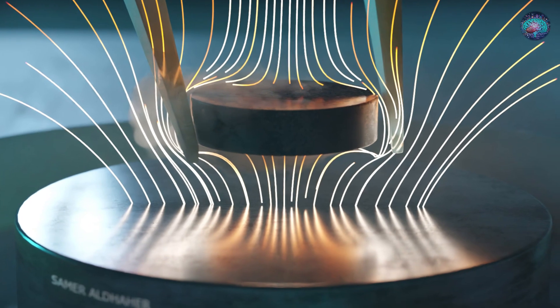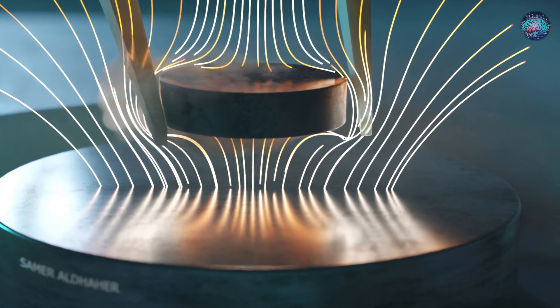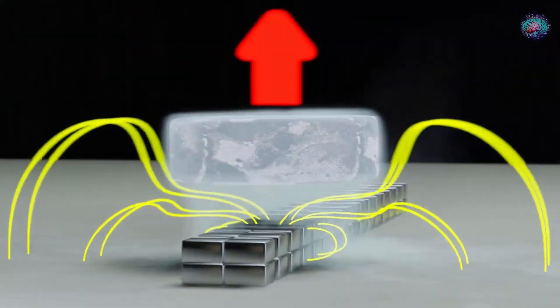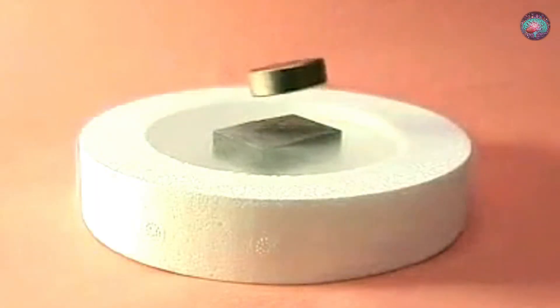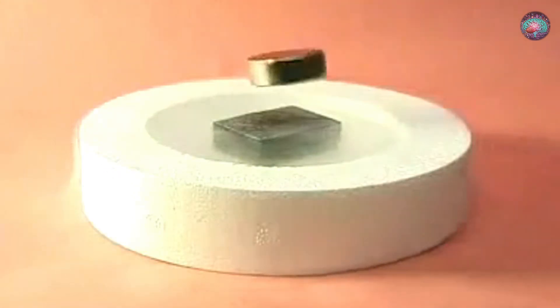For type 1 superconductors, the material can levitate if it completely expels external magnetic fields. However, its position and trajectory remain unstable, as it constantly attempts to rise to avoid the external magnetic field lines.